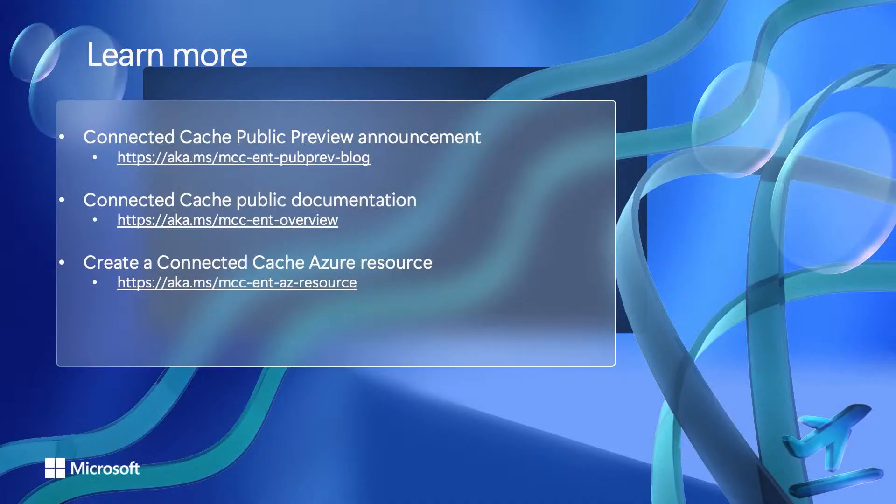If you'd like to learn more about Connected Cache, please check out the AKA links on the screen. First, we have a link that goes to our public preview launch blog post if you'd like to learn more. Next, we have a link that goes to our public documentation for Connected Cache. And finally, here's a link you can click if you'd like to go create a Connected Cache Azure resource right now in the Azure Management Portal. Thanks for coming to watch our Connected Cache session and we hope you enjoy the rest of the Technical Takeoff sessions.